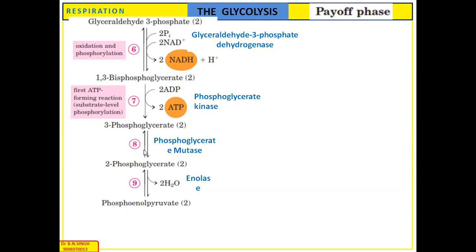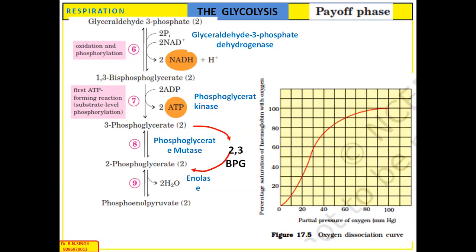In reaction 8, 3-phosphoglycerate is converted into its isomer 2-phosphoglycerate. This is an isomerization process carried out by the enzyme phosphoglycerate mutase. The conversion of 3-phosphoglycerate into 2-phosphoglycerate proceeds via the intermediate product 2,3-bisphosphoglycerate.